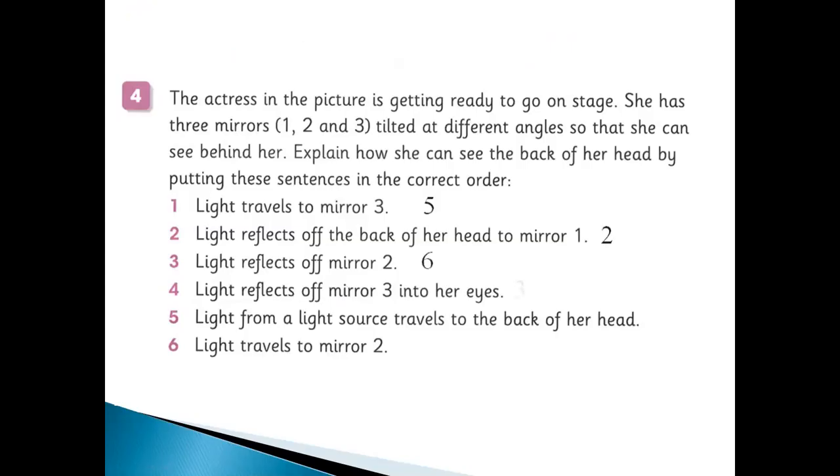After this is number six: light travels to mirror two. Mirror two is in front of her. After this, number four: light travels to mirror three. And after this, number three: light reflects off mirror three into her eyes, so the actress can watch or can see.